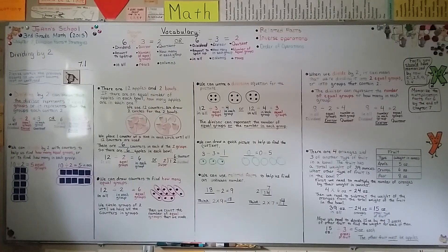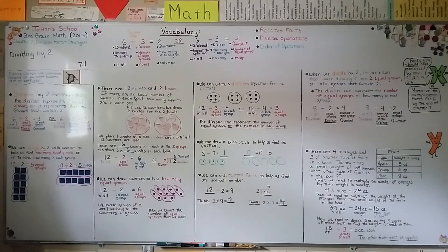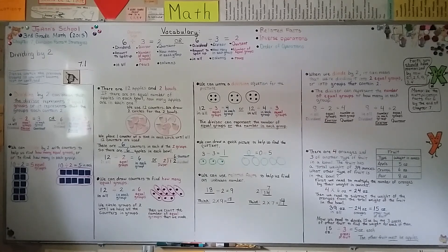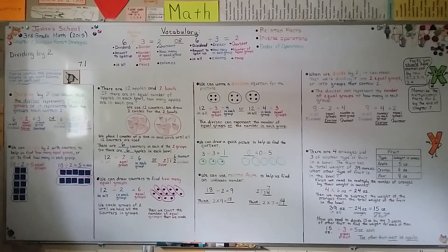Remember, when we're dividing by 2, the divisor 2 can represent 2 equal groups, or it can represent how many are in each group. We can use arrays to help us do division and divide by 2, and we can write division equations from pictures and arrays. I hope you're doing really well — I hope you're very happy, and I'll see you for our next lesson.